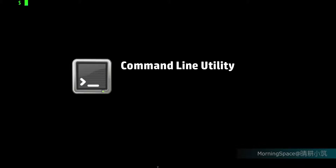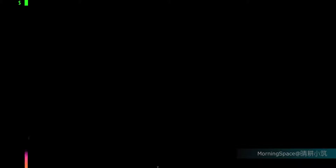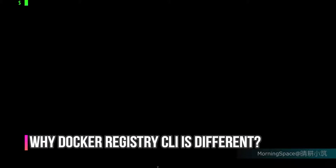Docker Registry CLI is a command-line utility written in Bash Shell to manage Docker Registry. There are some alternatives that can be found on GitHub. Most of them are written in Go and Python. I will give you some highlights to help you understand why Docker Registry CLI is different from others.